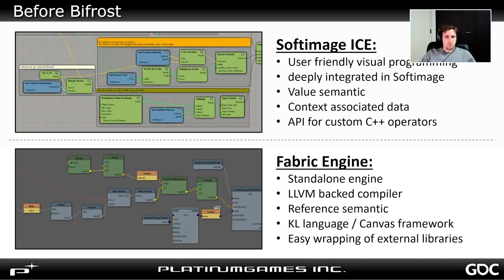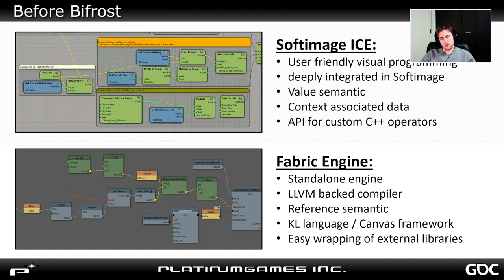Before I got into Bifrost, my story with visual programming started with ICE. ICE was a user-friendly visual programming framework which was deeply integrated inside Softimage. Back in the days, it revolutionized the industry by making it easy for artists and technical directors to implement efficient tools simply by connecting nodes together. Thanks to its context-associated data, it made it really easy to operate on geometries and build all kinds of effects.